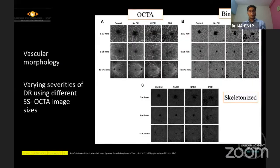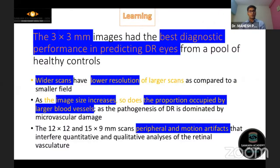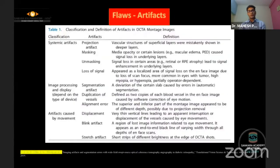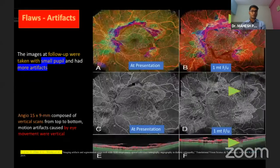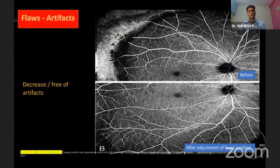Scan sizes of 3x3, 6x6, and 12x12 are available, but studies show 3x3 is sufficient for predictable performance in diabetic retinopathy. Wider scans have lower resolution, larger proportion of larger blood vessels, and peripheral artifacts. Motion artifacts are the worst type, and artifacts are more common when the pupil is not adequately dilated or head position is not correctly aligned.